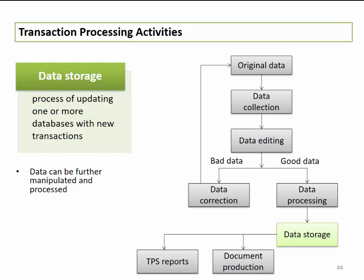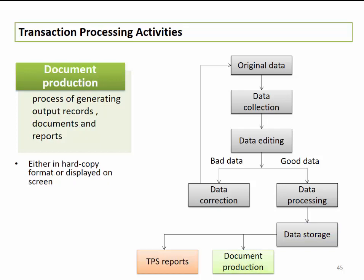Once data is saved, the last steps involve document production and TPS report generation. Document production is where we generate output reports, documents, and general reports needed for other systems. These can be either in hard copy format or displayed on screen. In a future lesson, we'll look at different types of documents — they can be system dependent and time dependent. Whenever documents are presented or created, they typically come in two formats: printed copies or displayed copies.